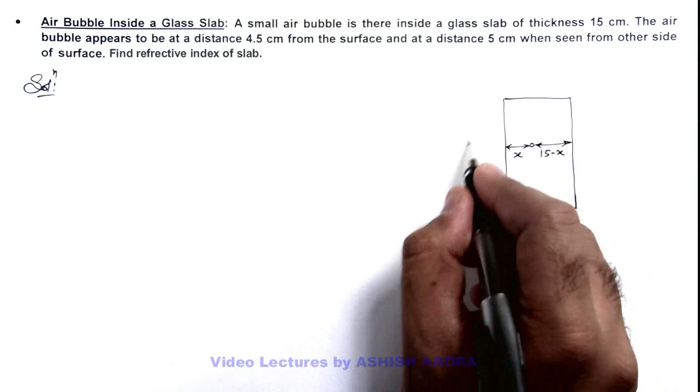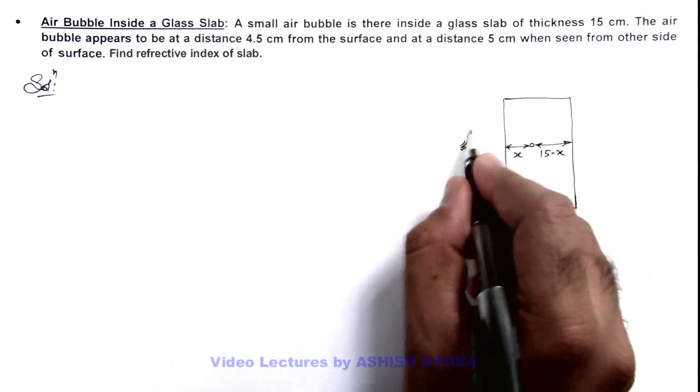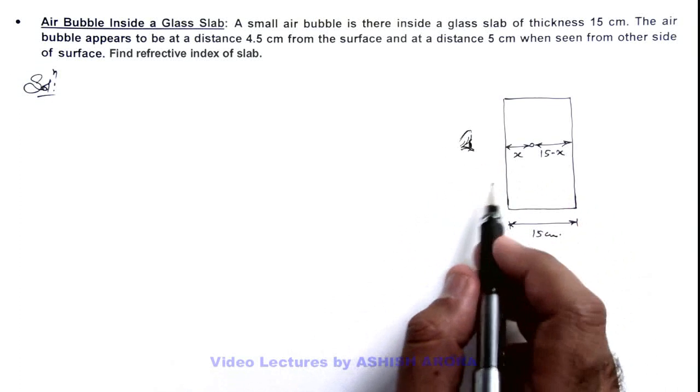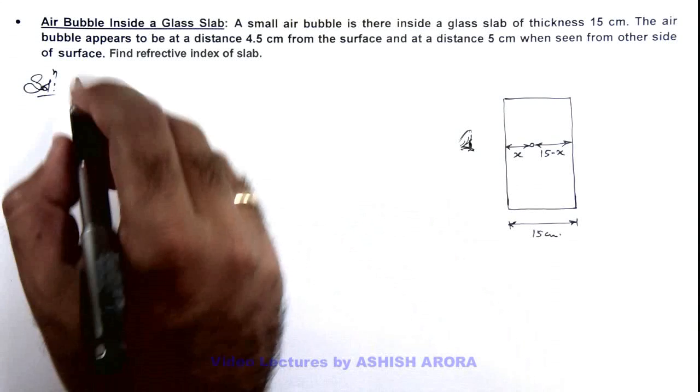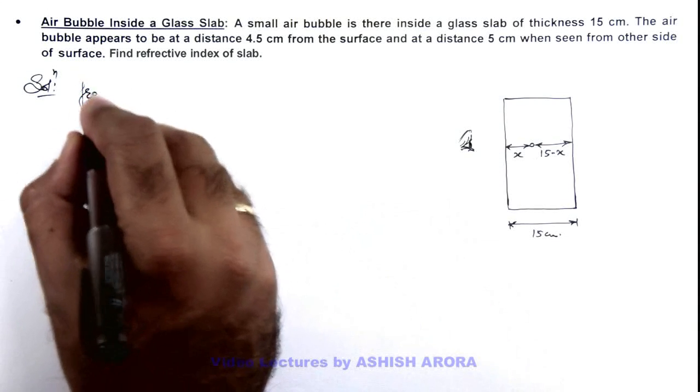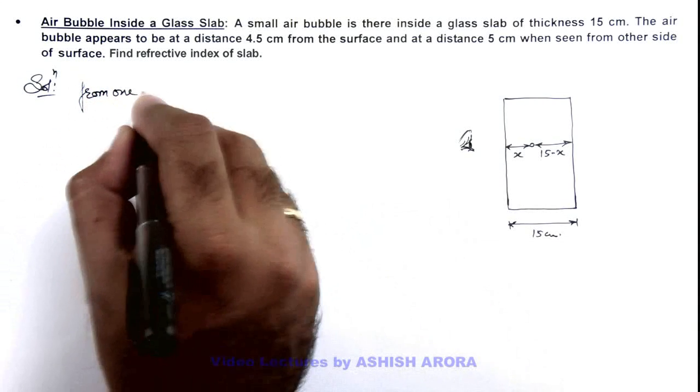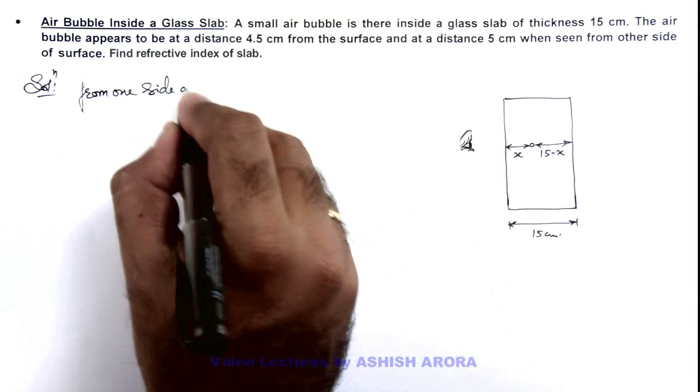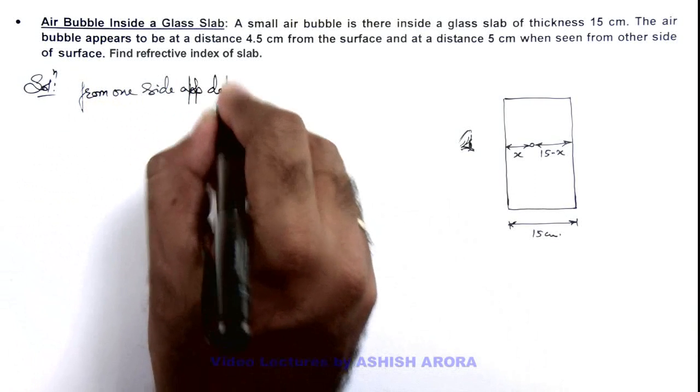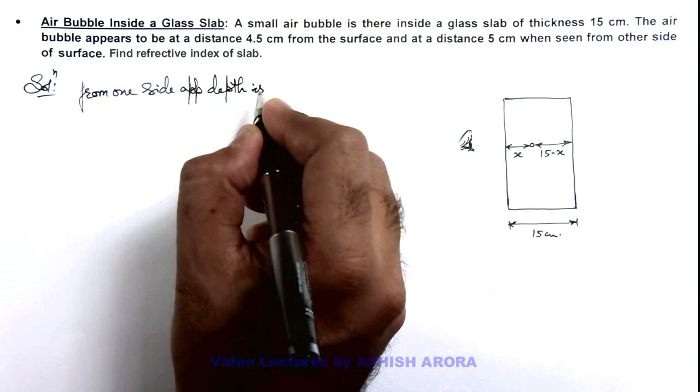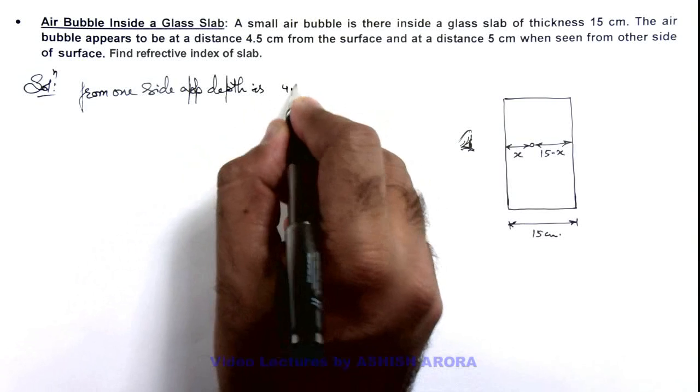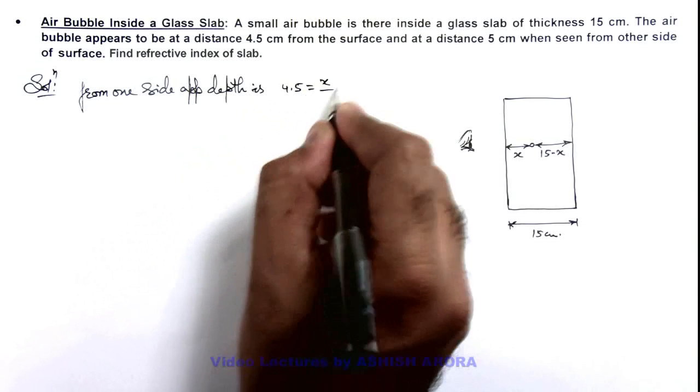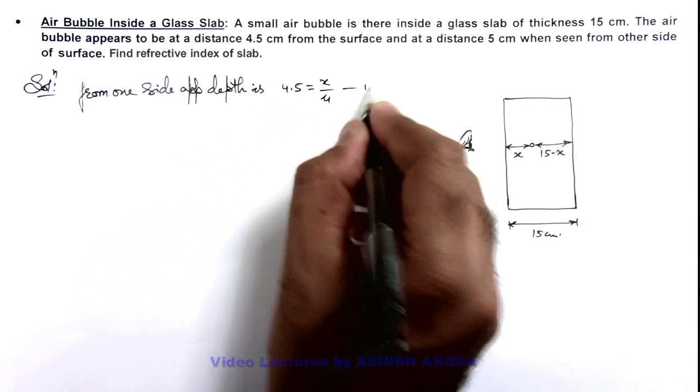If we have a look on this air bubble from one side, we are given that it appears to be at a distance 4.5 centimeter. So we can write from one side, apparent depth of air bubble is 4.5 centimeter which is equal to x by μ. That is equation 1.